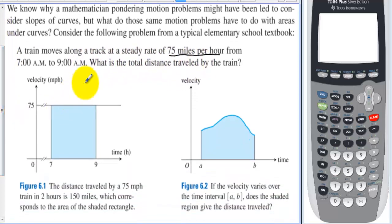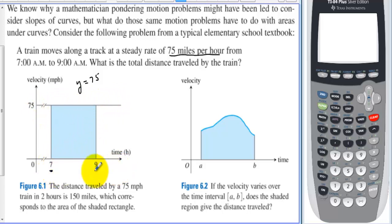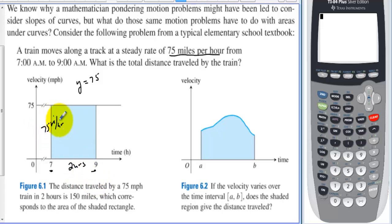We could say the speed is y = 75, and we could graph that — it's just a horizontal line at 75. If we plot from 7 to 9, that forms a rectangle: the width is 2 hours and the height is 75 miles per hour. When we multiply the two together, the hours cancel, and we are left with 150 miles that the train traveled.